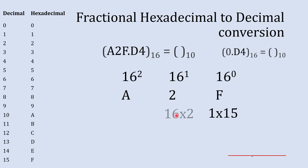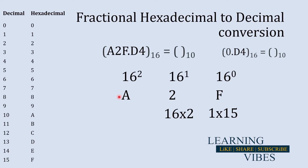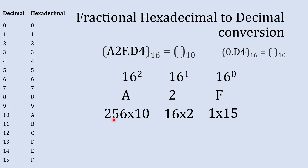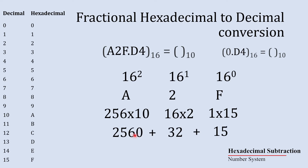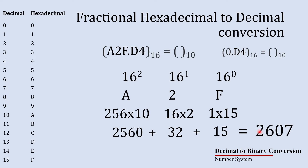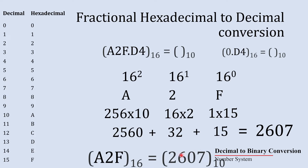Then 16 raised to 2 is multiplied by A. The decimal equivalent of A is 10, so 16 raised to 2 times 10 is 256 times 10, which equals 2560. Now we add all the results together: 2560 plus 32 plus 15, which gives us 2607. That is the decimal equivalent of the whole number part of this hexadecimal number.